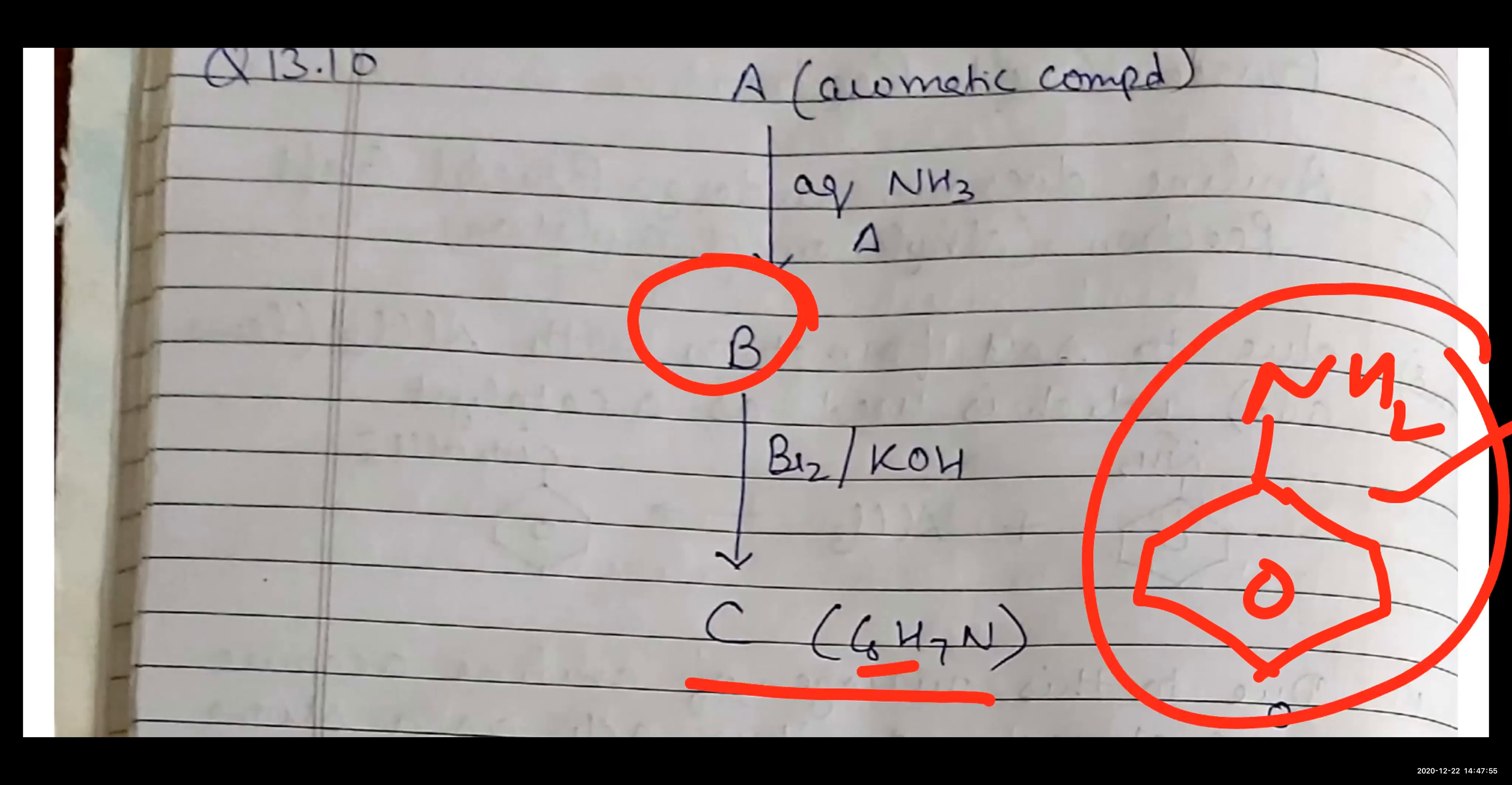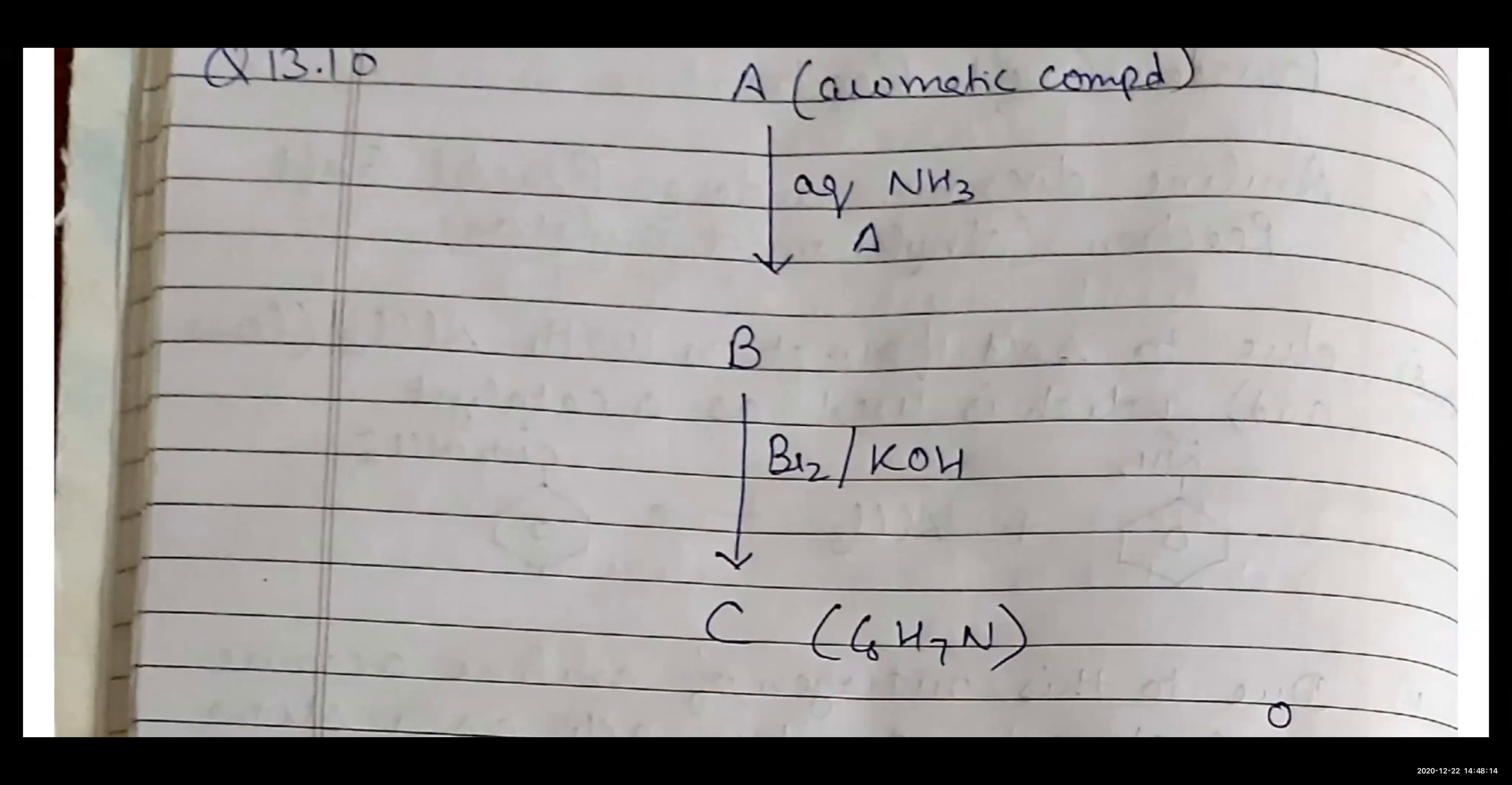Now think about Br2. You have to think about this. Where was the reaction of bromine and KOH where this aniline was made? A name reaction was one. Hofmann bromide degradation. What happens in that?